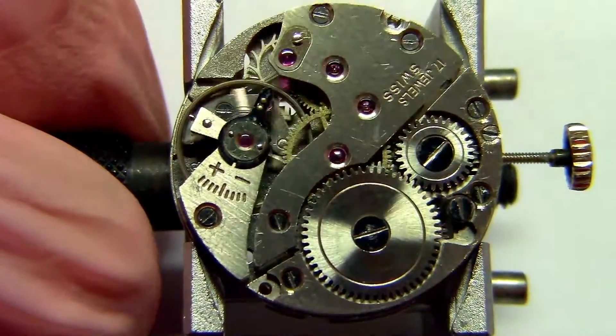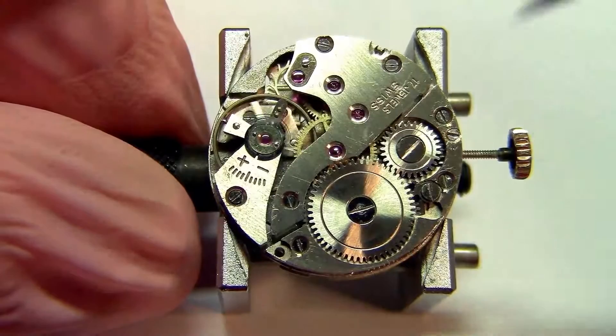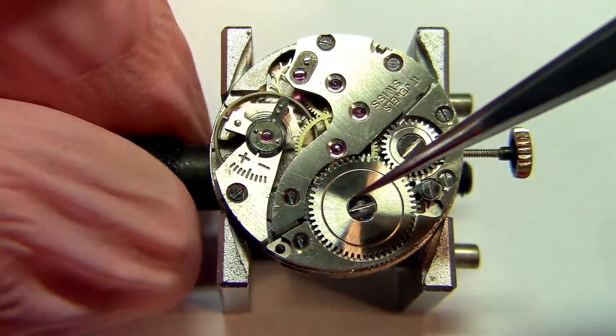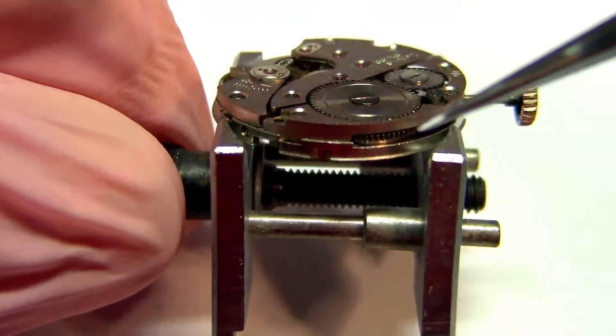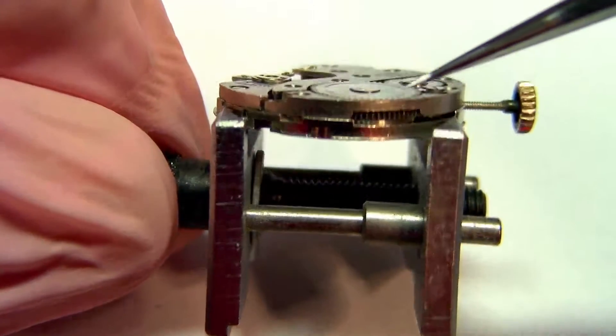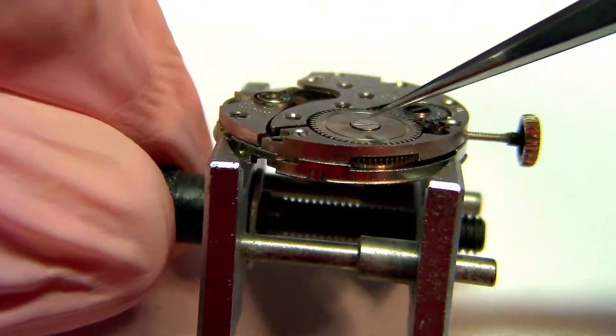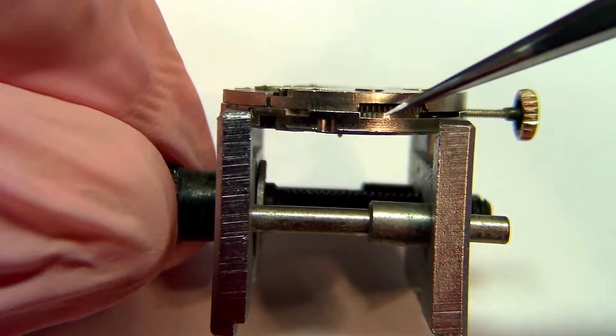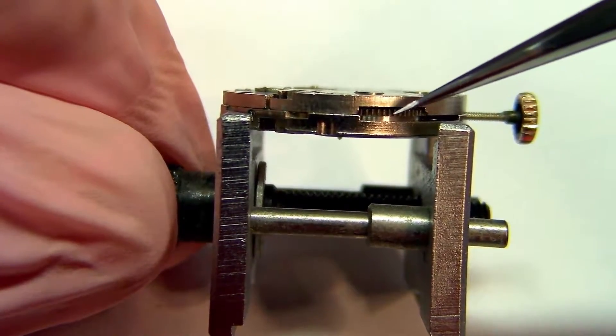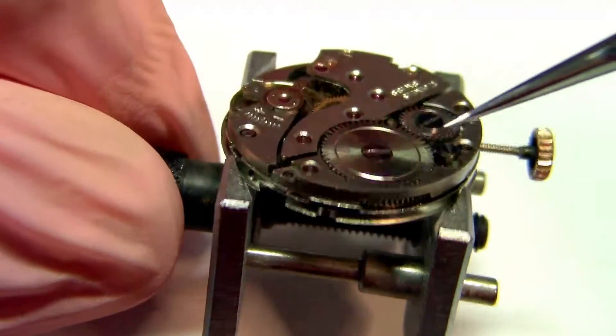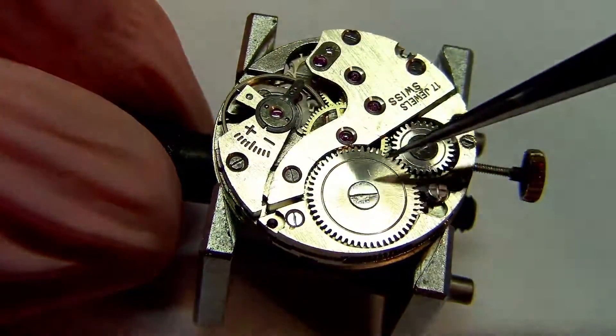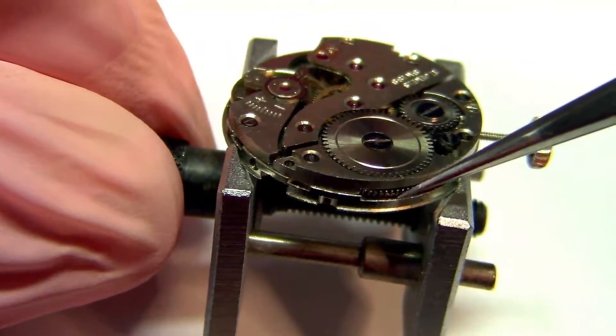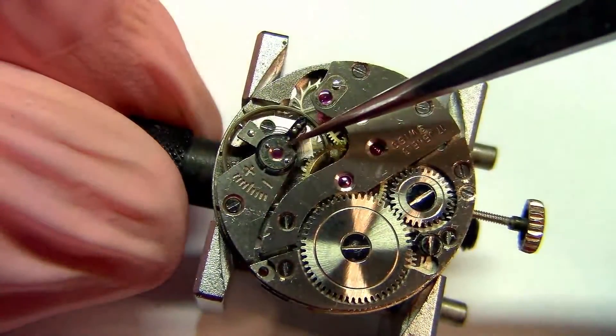So all we have here below this first level is the force from the barrel. This is the barrel here. And the barrel is actually the first wheel. It's the first gear from the gear train. Everything else is just to make the energy go from here to here, which is the balance wheel.